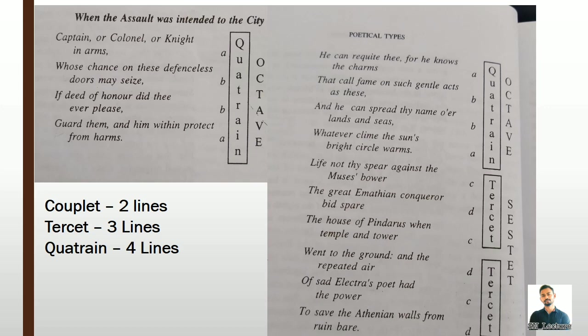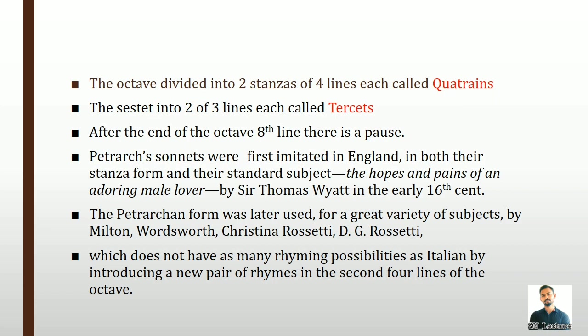The octave is divided into two stanzas of four lines each called quatrains, and the sestet into two stanzas of three lines each called tercets. After the end of the octave — that is, after the eighth line — there is a pause while reciting. Petrarch's sonnets were first imitated in England in both their stanza form and their standard subject: the hopes and pains of an adoring male lover.